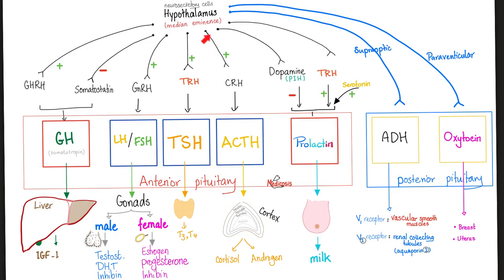Here's my hypothalamus. Here's the anterior pituitary. Here's the posterior pituitary. The anterior pituitary secretes growth hormone, LH and FSH, TSH, ACTH, and prolactin. The posterior pituitary did not synthesize anything — it just took the ADH and oxytocin already made by the hypothalamus, stored them in the posterior pituitary, and then released them to the bloodstream.